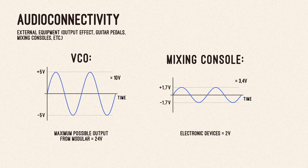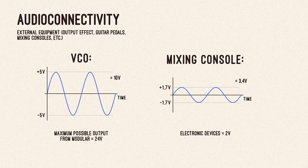Let's have a look at connecting your modular with external equipment such as output effects, guitar pedals, or mixing consoles. First we need to understand how audio signal flows in modular versus common audio equipment. A typical sine wave signal from a VCO will have an amplitude of 5V and will be bipolar, oscillating between positive and negative range with a total peak-to-peak voltage of 10V. The maximum possible output from your Eurorack modular synthesizer can be almost equal to the power supply voltage — so that means maximum 24V peak-to-peak. A typical line-level signal from a mixing console has much lower amplitude, also bipolar, but with a peak amplitude of 1.7V at maximum.